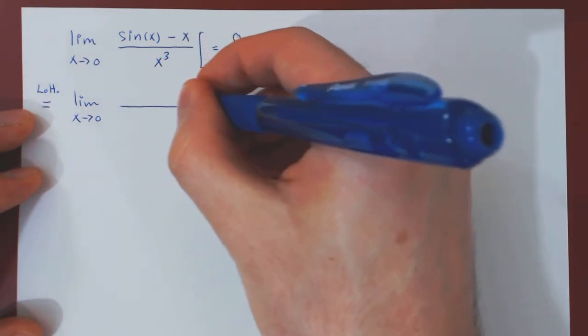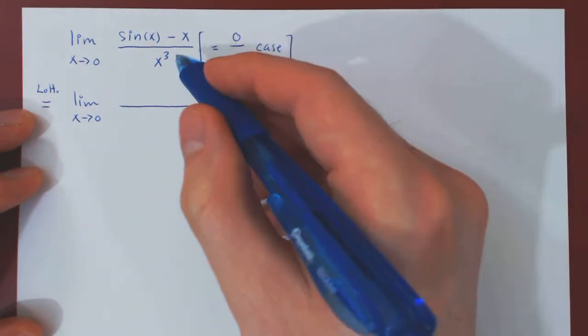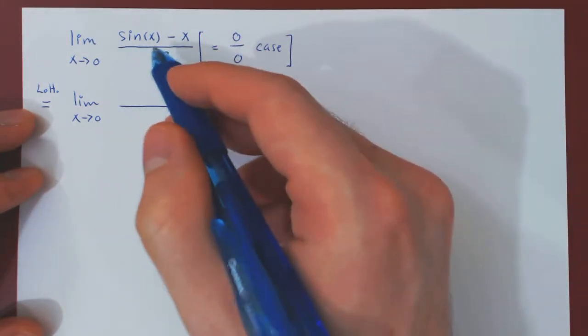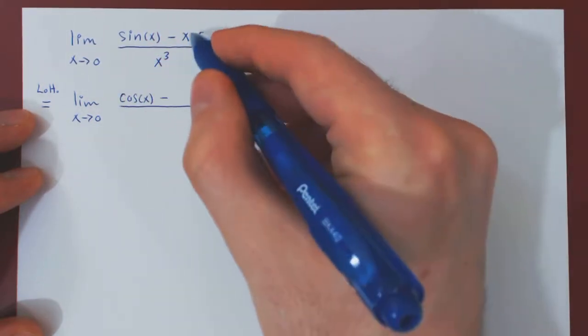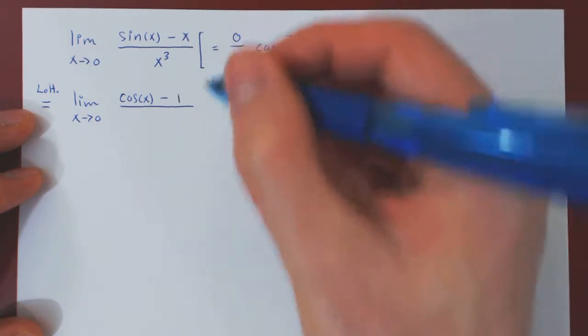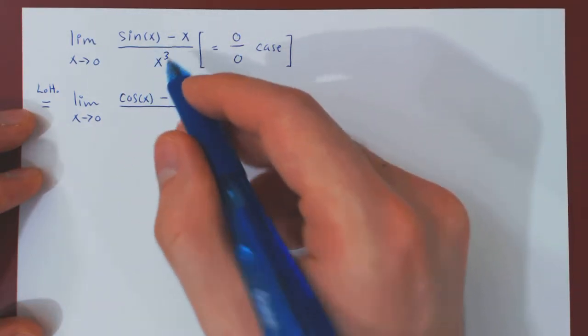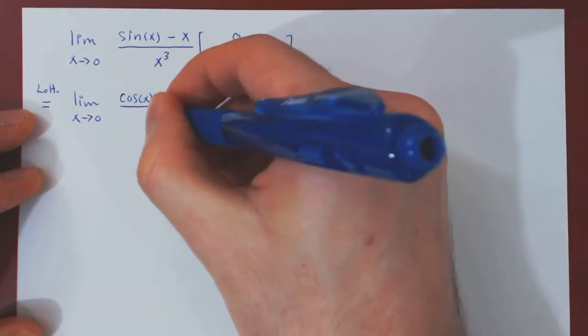As always, the limit stays the same. And now we replace the numerator by its derivative and the denominator by its derivative. Derivative of sin(x) is cos(x), minus the derivative of x, which is 1, over the derivative of x cubed, which is simply 3x squared.